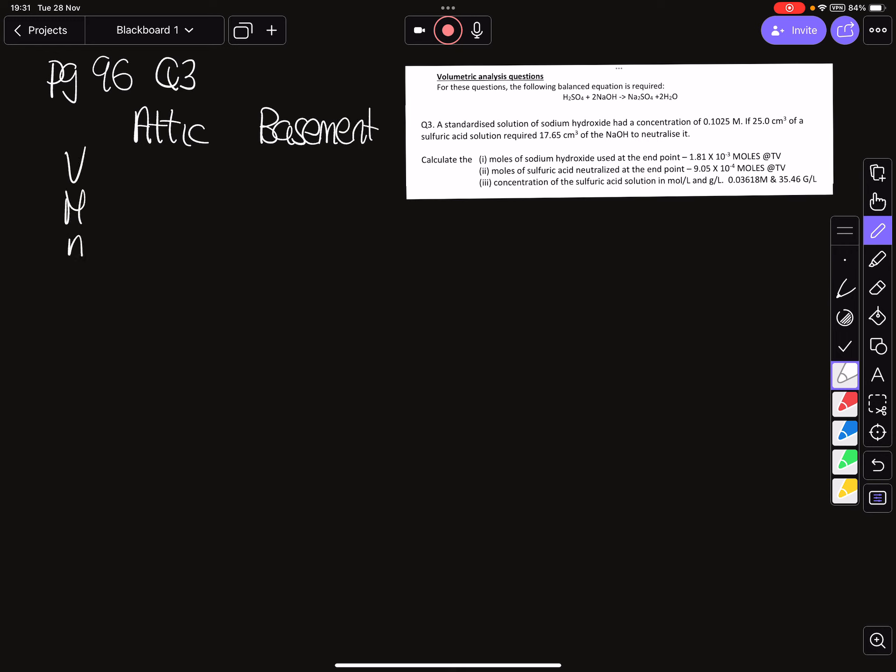Alright, so we are now looking still on page 96, final question, question three. So we set up our table: we go attic, we go basement. We want a volume, we want a concentration, we want an n for our moles, and we have any extra info if there might be in the question.